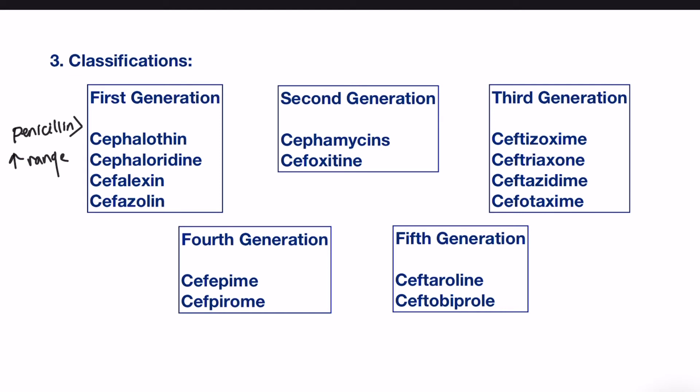Secondly, we have cefamycin and cefoxitin. These two drugs show a broader spectrum of activity than most first-generation cephalosporins, and this is due to greater resistance to beta-lactamase — the same enzyme seen in penicillin deactivation, which also deactivates cephalosporins through a ring-opening reaction in the beta-lactam.